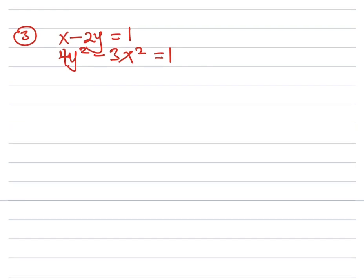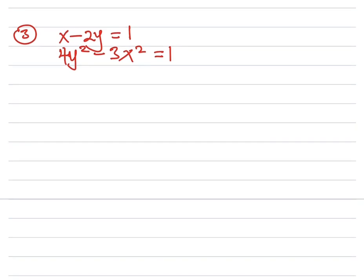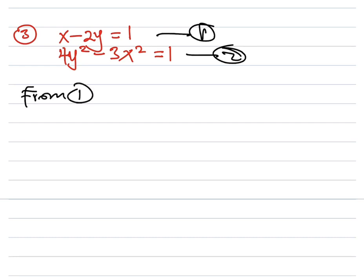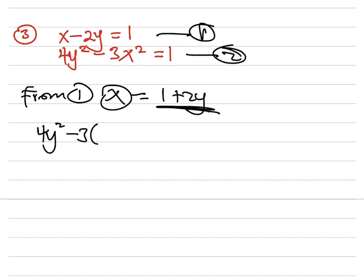Let's look at another one — this looks complicated but it isn't. Let's call the first equation 1 and the second equation 2. From equation 1, we rearrange so that x = 1 + 2y. We then put this definition of x into equation 2, so wherever we see x, we put 1 + 2y. This gives us 4y² − 3(1 + 2y)² = 1.